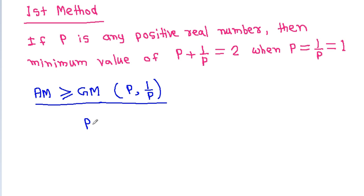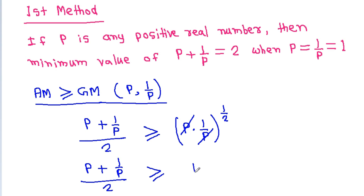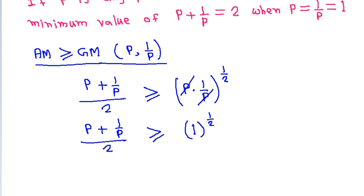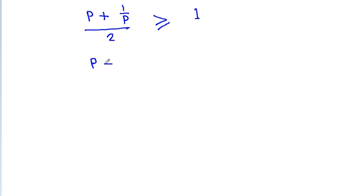So AM will be p plus 1 by p divided by 2, which should be greater than or equal to GM, which is the square root of p times 1 by p. So p plus 1 by p divided by 2 should be greater than or equal to 1 to the power 1 by 2. Therefore p plus 1 by p should be greater than or equal to 2.